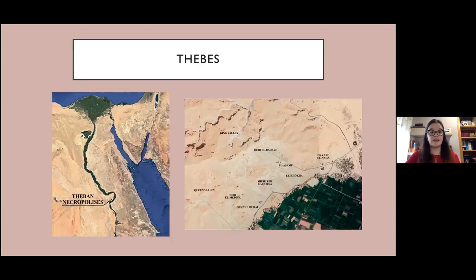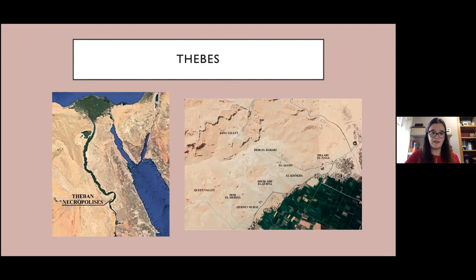Moving to the geographical context: Thebes is the Greek name of the Egyptian city of Waset, the religious capital of Egypt since the beginning of the New Kingdom. The city of Thebes would correspond more or less to the area between the temples of Karnak and Luxor and would occupy both sides of the Nile river. In its western part, in an area of around two kilometers inland, there are different necropolises which were used throughout the New Kingdom by both royal — the Valley of the Kings and the Valley of the Queens — and private individuals. The private necropolis occupies the areas of Deir el-Medina, Kurnet Muray, Sheikh Abd el-Qurna, El-Khokha, Deir el-Bahari, Dra' Abu el-Naga, and El-Asasif.